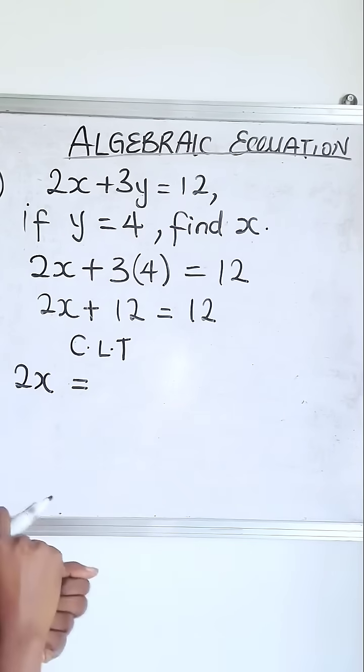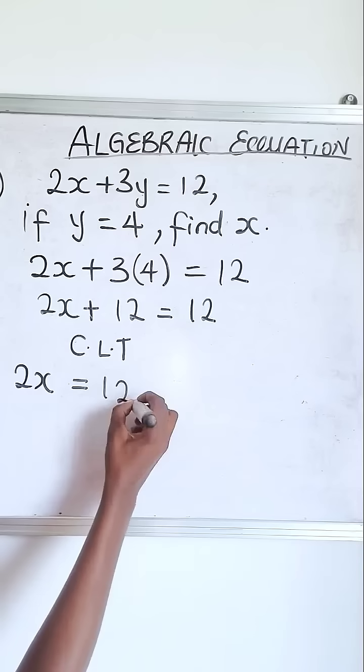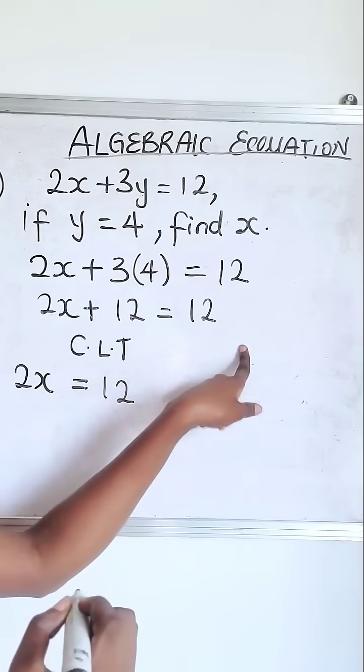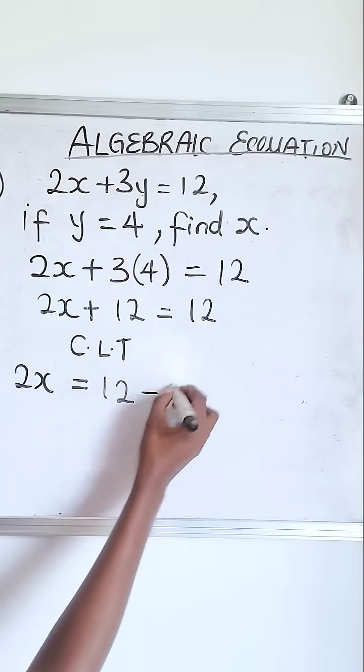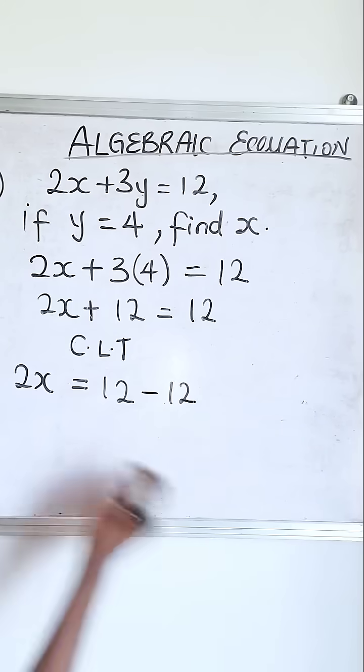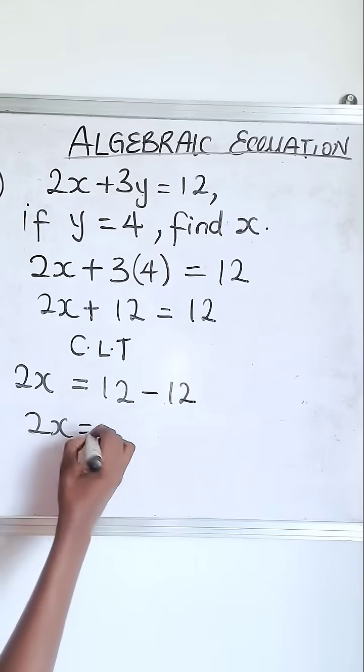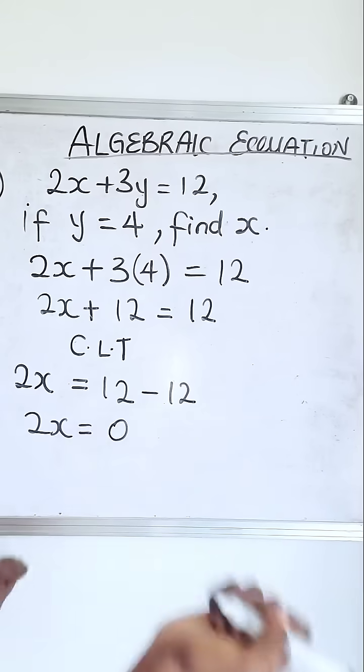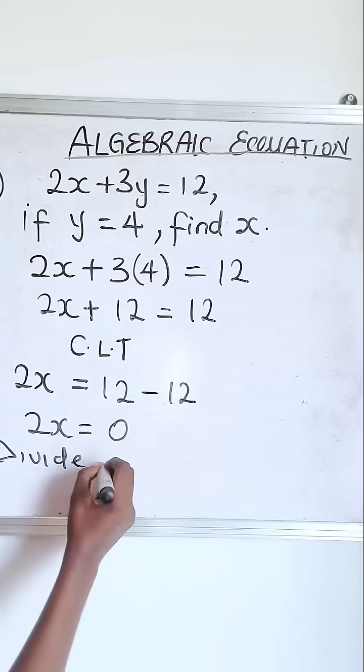So we have 12 plus 12 is crossing the equal sign. Remember, so it's a change to the opposite, which is minus 12. So 2x is what? Zero. Now remember, you're dividing both sides by the coefficient of x, which is 2.